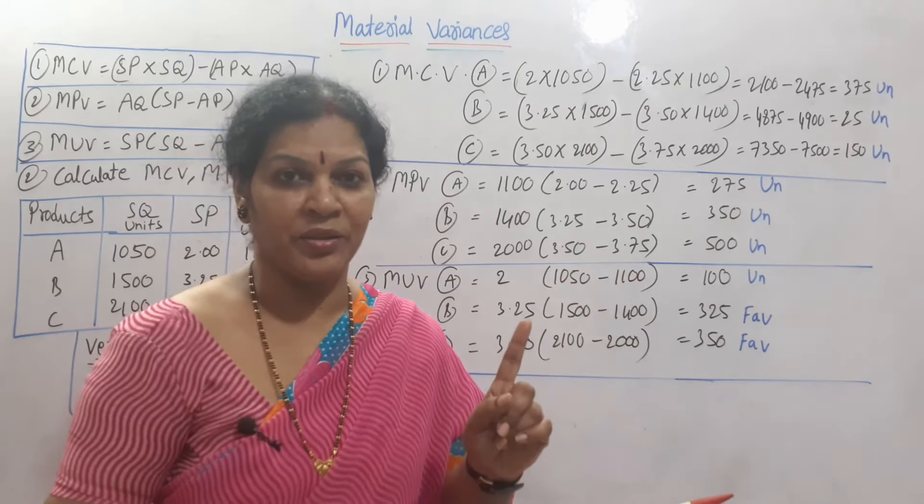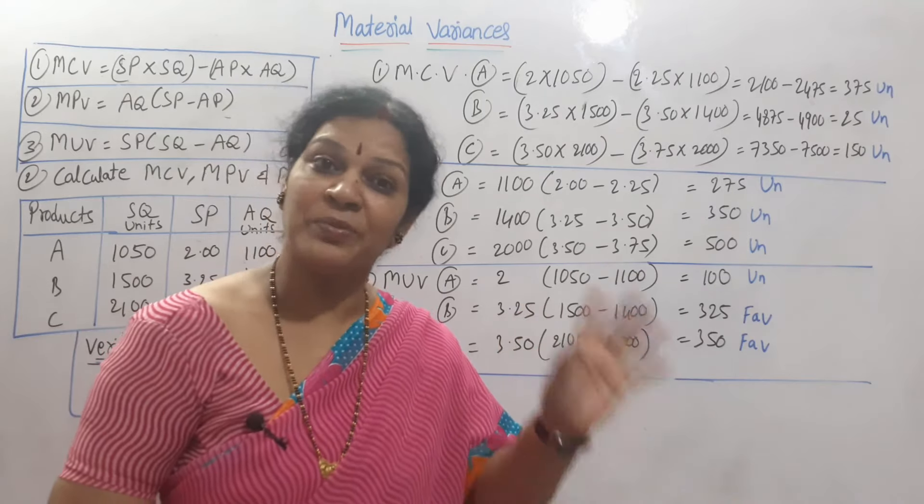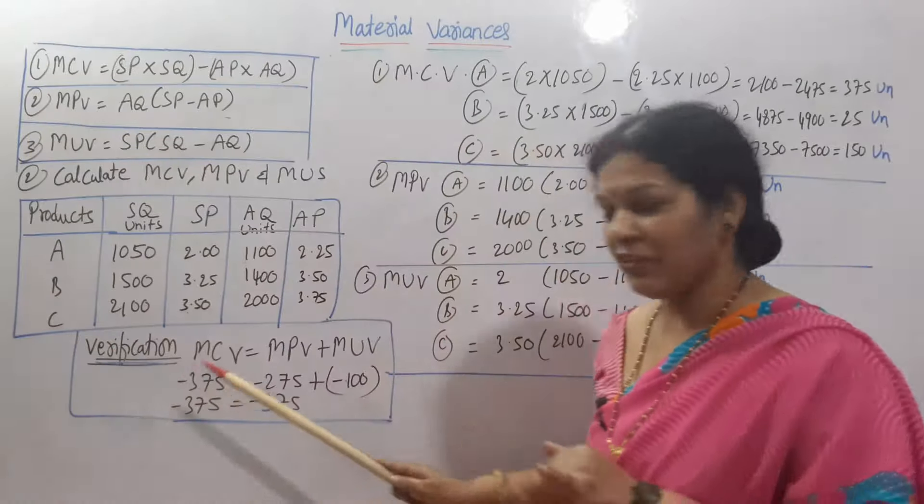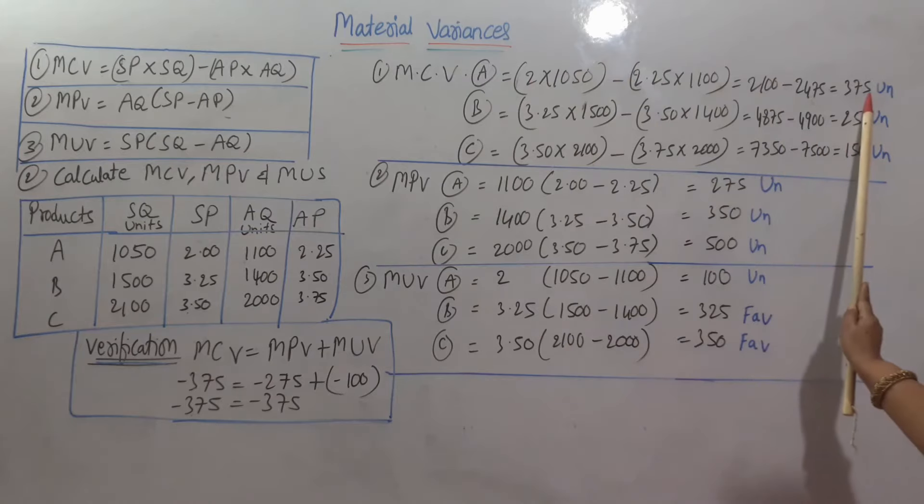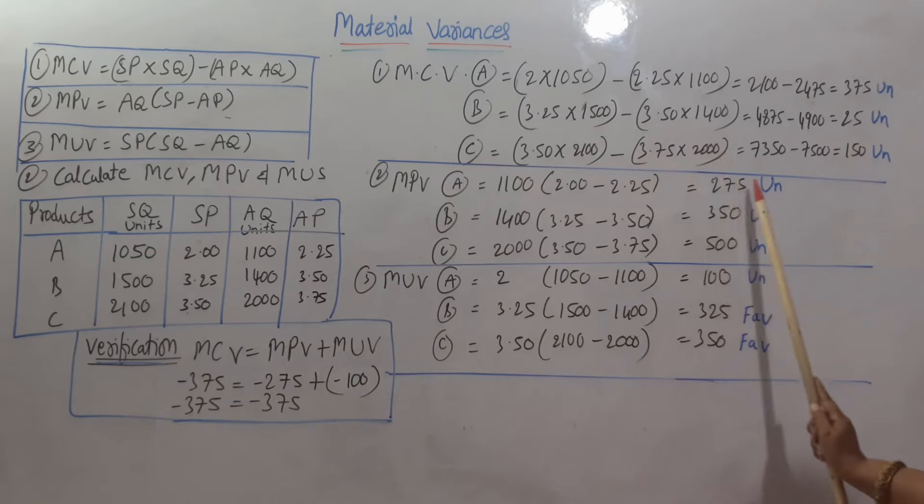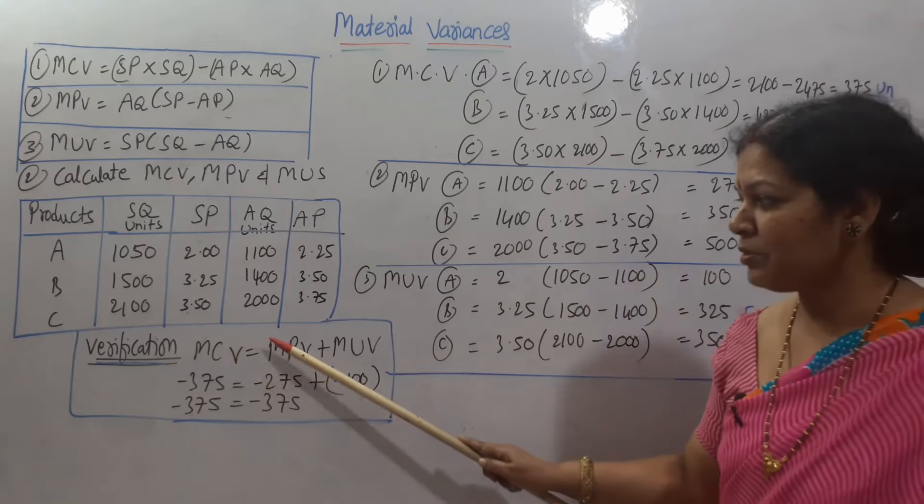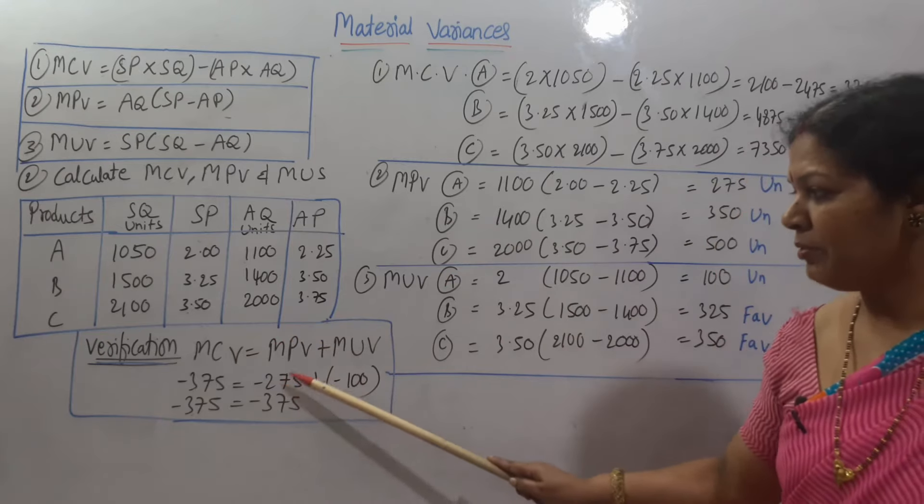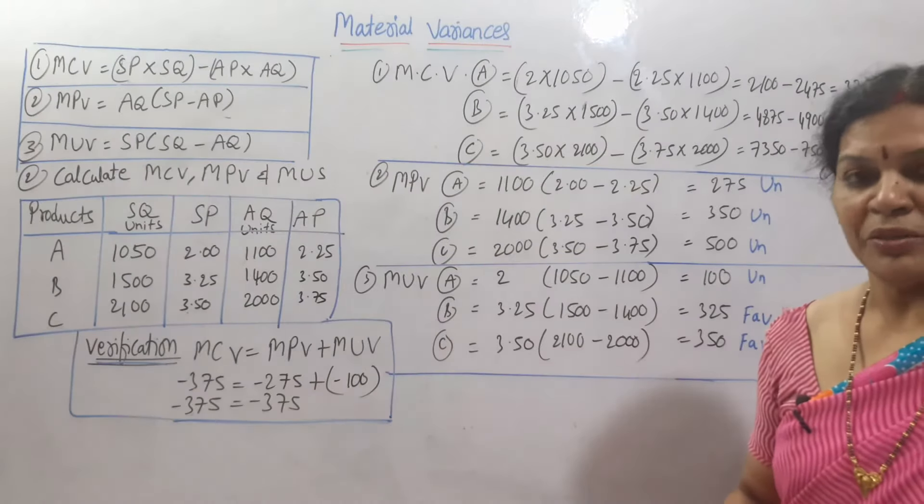Now, what we have done, is it correct or not? How do we verify it? There is a formula I already told you. Material cost variance equals material price variance plus material usage variance. So, the same formula, verification. If you see the verification, MCV is 375 unfavorable, minus 375. MPV is 275, this is unfavorable. And MUV, 100 is also unfavorable, minus 100.